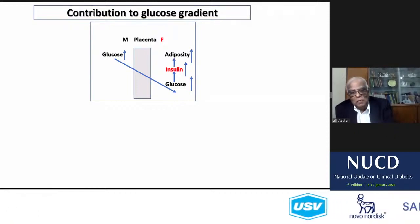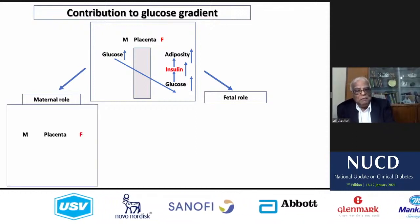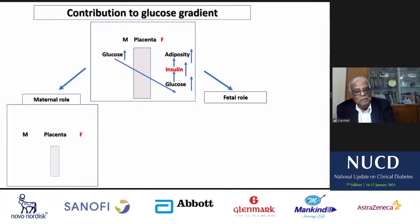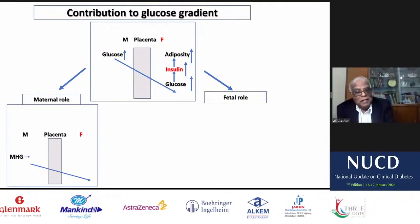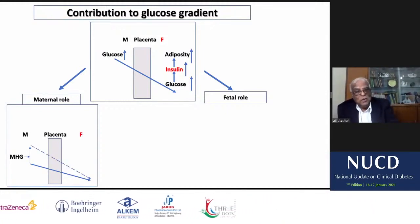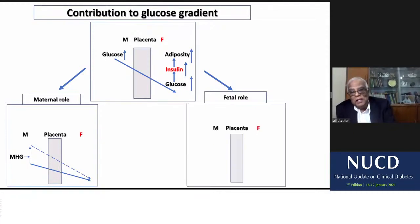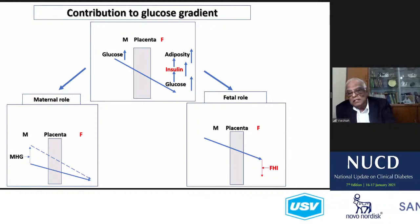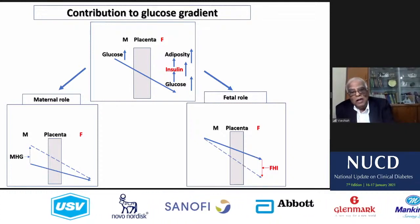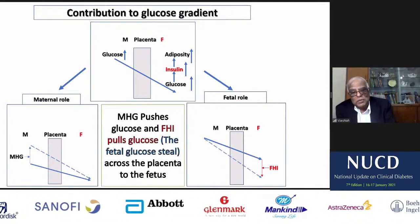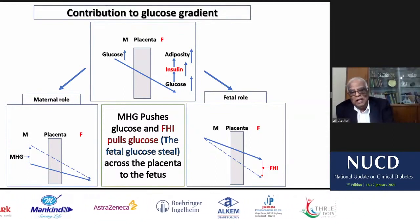Maternal hyperglycemia crosses the placenta, goes to the fetal compartment. What happens is: this hyperglycemia stimulates fetal hyperglycemia as a consequence of the higher glucose level. This is what we call as maternal hyperglycemia pushing glucose into the fetal compartment, and fetal hyperglycemia pulling glucose. This is called fetal glucose steal across the placenta. This is the concept of fetal handling of maternal glucose — how the fetus handles the mother's glucose. The fetus is able to control it by secreting more insulin, so you will have both fetal hyperglycemia and maternal hyperglycemia.